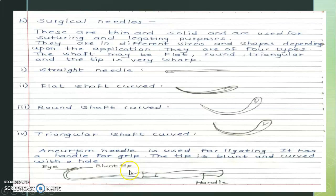Next is the aneurysm needle, which is used for ligating. It has a handle for grip. The tip is blunt and curved, with a hole. So the tip is blunt and curved, and there is a hole at the tip through which a thread can be passed.